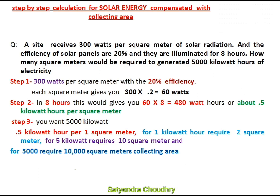The question is: a site receives 300 watts per square meter of solar radiation, the efficiency of solar panels is 20%, and they are illuminated for 8 hours. How many square meters would be required to generate 5000 kilowatts of electricity?